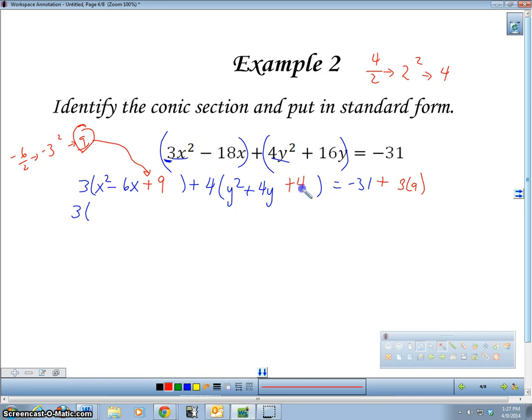I'll square that and I get 4. So I'm going to add 4 here. And I'm going to add 4 times 4. Remember, we have to do this times this. Alright, so let me simplify this out a little bit. So I'm going to get 3 times x minus 3 squared, plus 4 times y plus 2 squared, equals negative 31, plus 27, plus 16, and I think that equals 12.